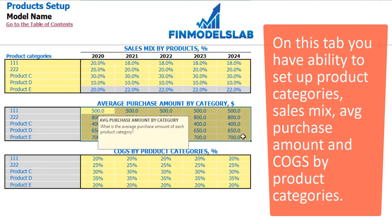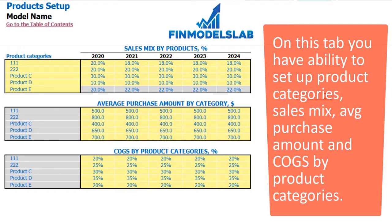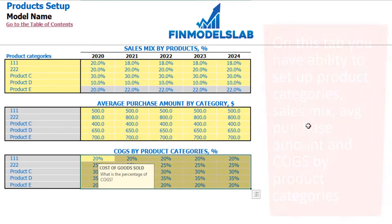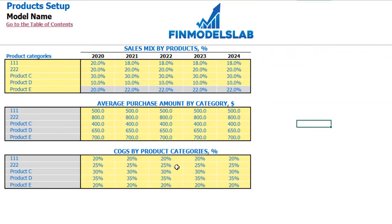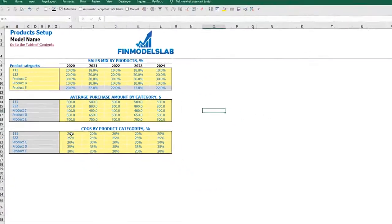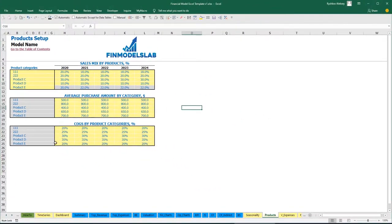Below, you can set up the price for your product in dollars and COGS, by product categories, by year, as a percentage of revenue.